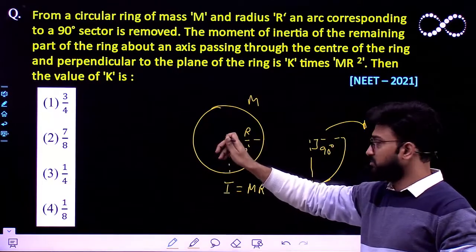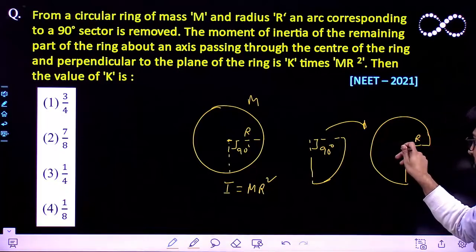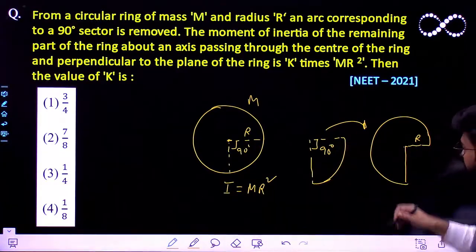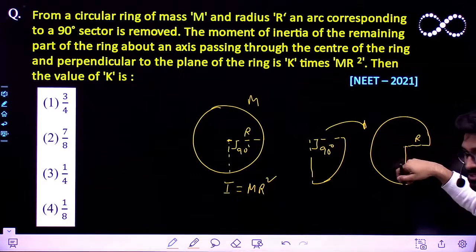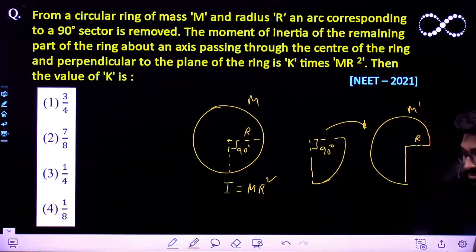The moment of inertia about this axis is given by MR². You need to find out the moment of inertia about this axis when this arc has been removed. For that you need to find out the mass of this remaining portion of the ring. Let it be M dash.